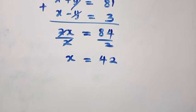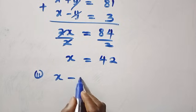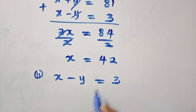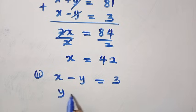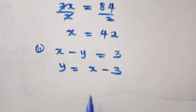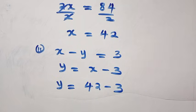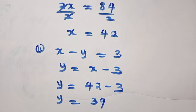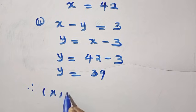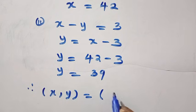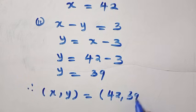Since x equals 42, we use equation 2: x minus y equals 3. From here, y equals x minus 3. Replacing x with 42, we have y equals 42 minus 3, so y equals 39.